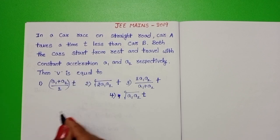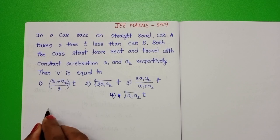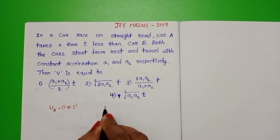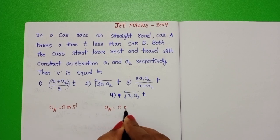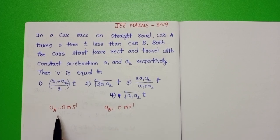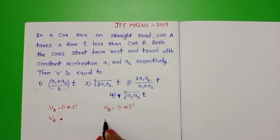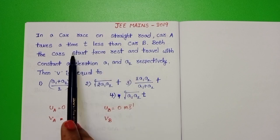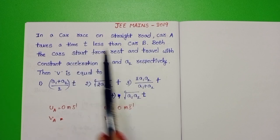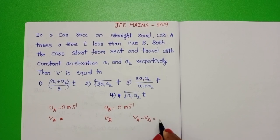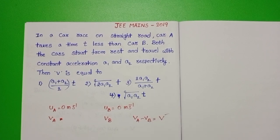In the given question, initial velocity of car A is equals to 0 meter per second and initial velocity of car B also 0. The velocity of car A is greater than car B. Let final velocity of car A be VA and car B be VB. In the given question, the difference of velocities of car A and car B is V. VA minus VB is equals to V. We have to find out V in this question.